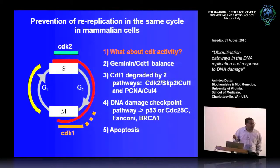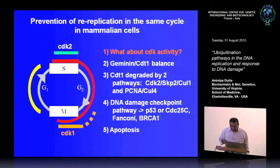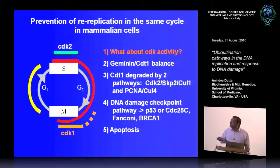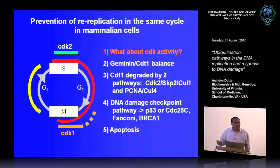How is re-replication prevented in the same cell cycle? The Geminin-CDT1 balance is clearly important, and CDT1 is degraded by two pathways — CUL1 and CUL4. But cyclin-dependent kinase activity kept haunting us. Nasmyth and Nurse in the mid-90s had shown in C. elegans and S. pombe that inhibiting cyclin-dependent kinase was a sure way of causing re-replication in yeasts. But we could see no sign of that in mammalian cells.